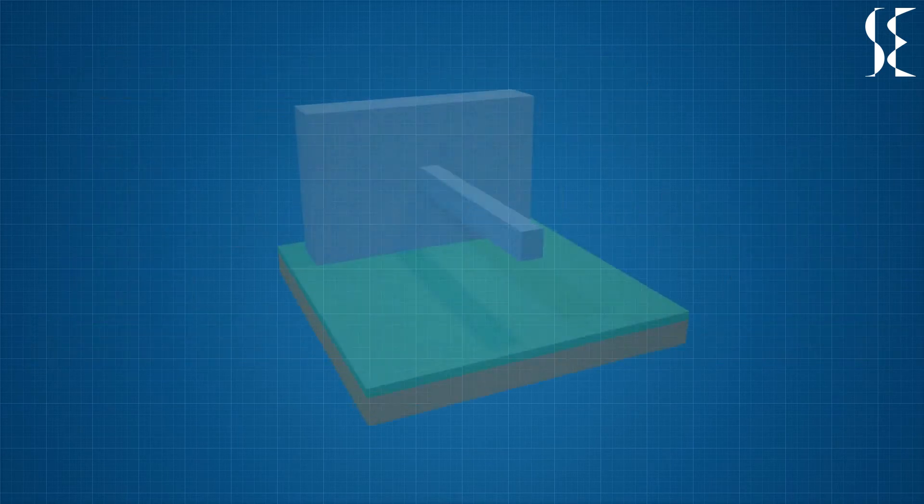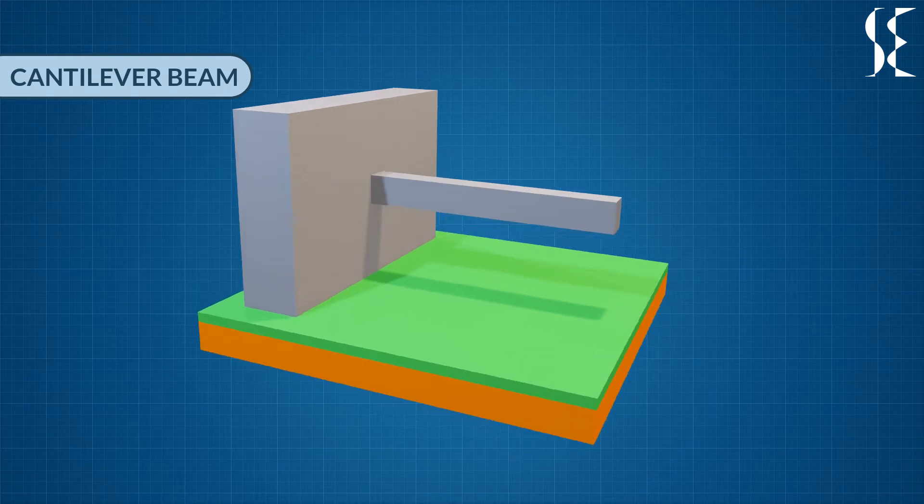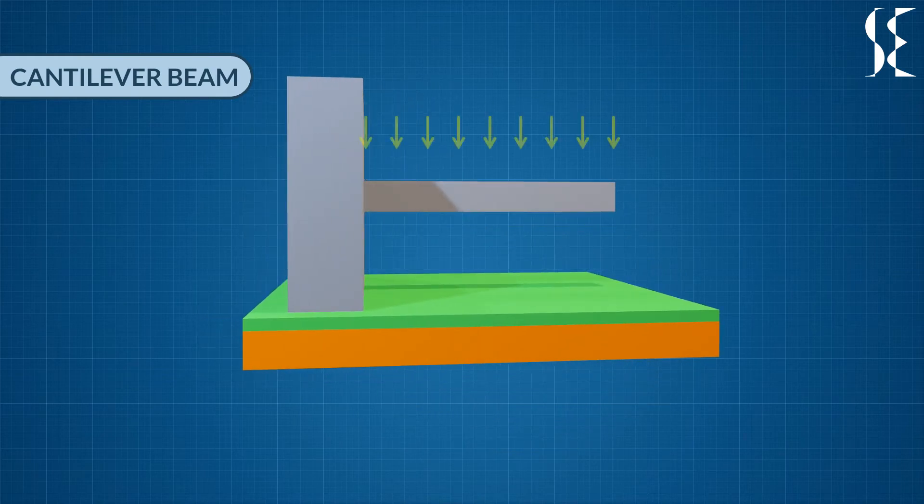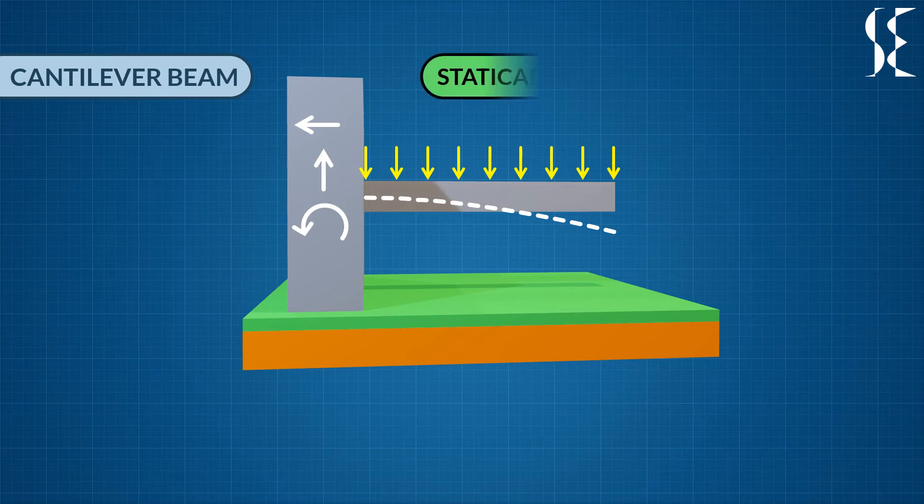Next, we will see a cantilever beam which is fixed on one side and free on the other side. Deflected shape due to loading will look something like this. This beam has got 3 unknowns hence they can be found by equilibrium equations making this beam statically determinate.